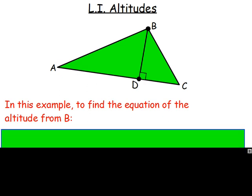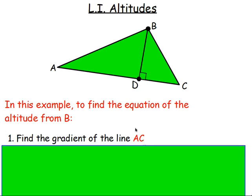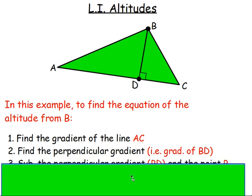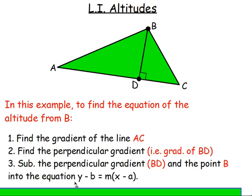What we can always do is work out the gradient of line AC. Because we know they're at right angles, because they're perpendicular, if you turn the gradient upside down and change the sign, you'll get the gradient of line BD. First, work out the gradient of AC. Find the perpendicular gradient - turn it upside down, change the sign. If it was 3/4, turn it upside down, you get -4/3. Last but not least, gradient-point equation. You would know the gradient, and the point would be point B.